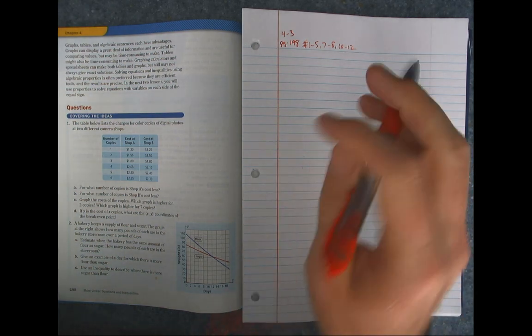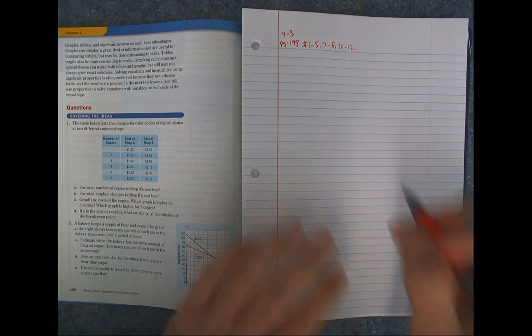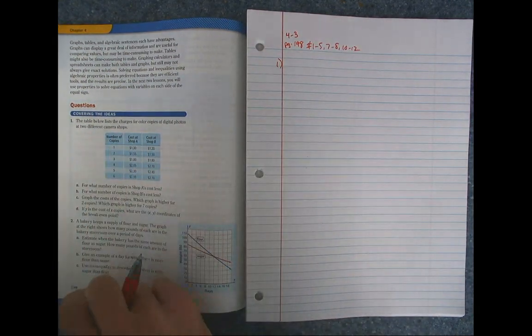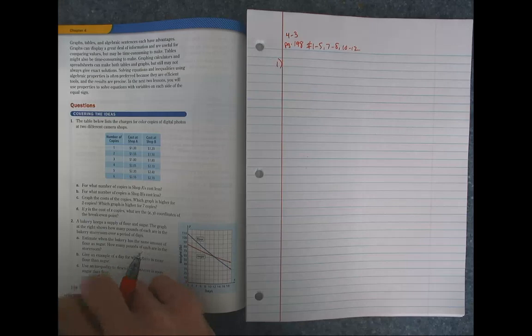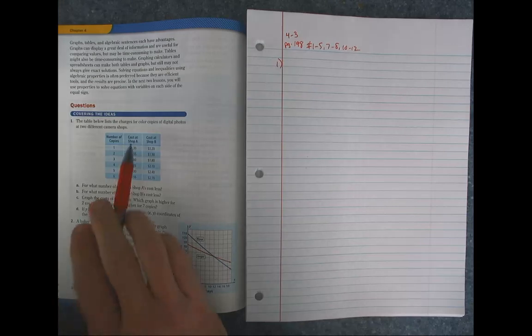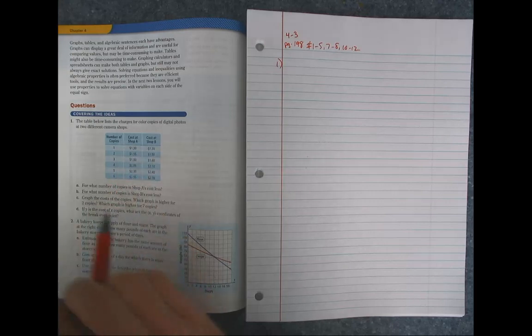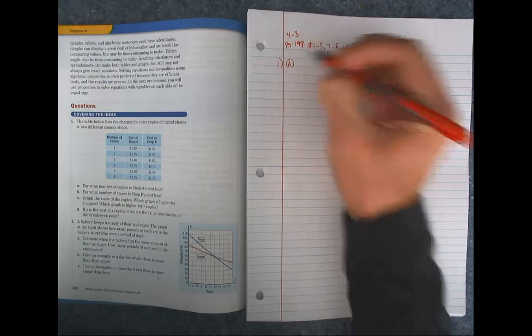This is Lesson 4-3's homework assignment in the textbook. We're starting with number one. The table below lists the charges for colored copies of digital photos at two different camera shops. So you've got the prices here for shop A and shop B.